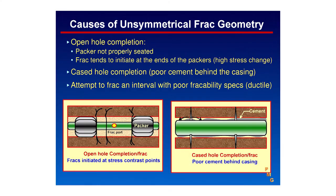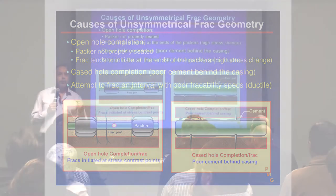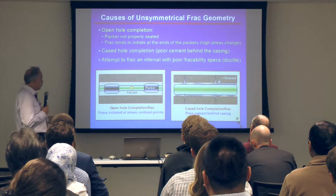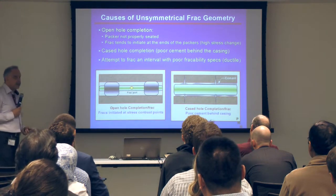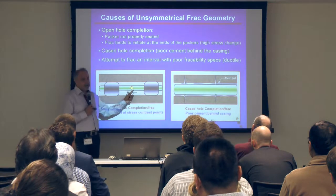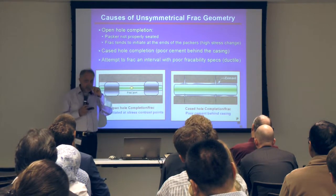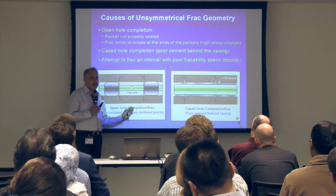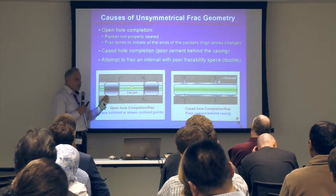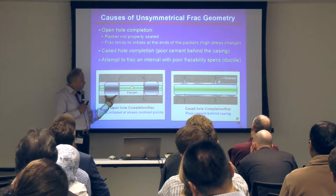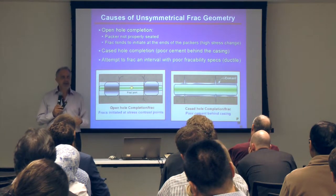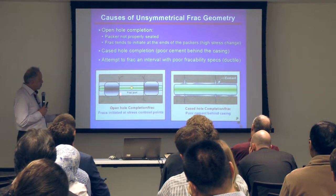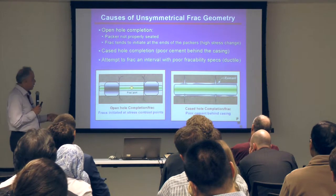Some reasons why we have uneven or random fractures: in open hole completion, the packers are inflated and we're supposed to frack right at the frack port. But from micro seismic, we sometimes see the frack tends to occur near the edge of the packer. When you inflate the packers, very high stress is applied in that area of the horizontal well, but once you move into the open hole section you have lower stress. That contrast causes some frack stages to place themselves at the packer edge, giving uneven geometry.